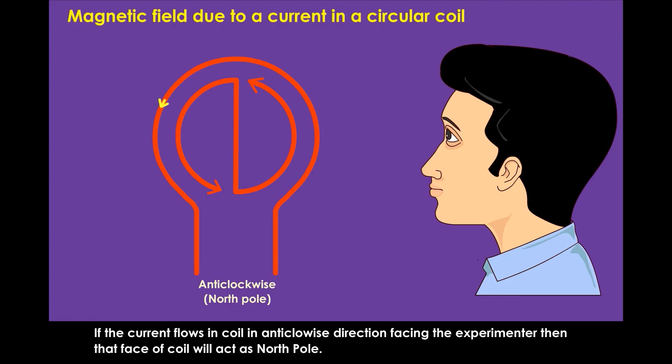If the current flows in the coil in anti-clockwise direction facing the experimenter, then that face of the coil will act as north pole.